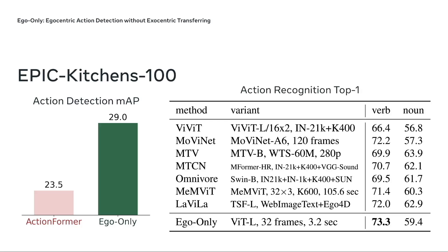We also benchmark EgoOnly on action recognition, which allows us to compare with more established video models. Note that these state-of-the-art models might take hundreds of frames as input, train on huge datasets, exploit multimodal supervision, or model long-term temporal context. Surprisingly, we found EgoOnly outperforms all these approaches in classifying verbs, probably thanks to the knowledge learned in the egocentric video MAE stage. At the same time, we notice that EgoOnly lags behind in classifying nouns, probably because existing solutions often pre-train on large image datasets with many more diverse objects.